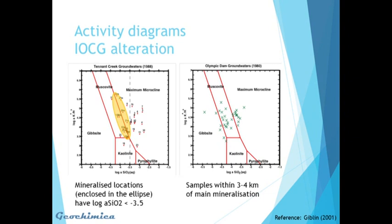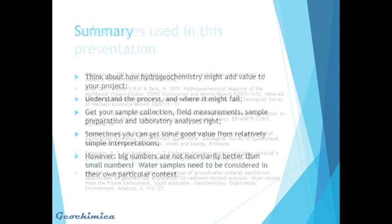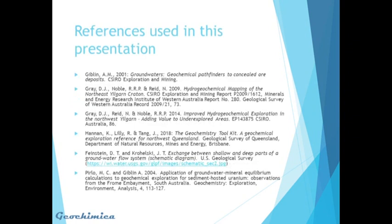We can also look at activity diagrams. Two examples here are for iron oxide copper gold type deposits. The one on the left is from Tennant Creek — a regional scale sampling exercise — and we can see that those samples indicated in the orange ellipse plot on the muscovite–K-feldspar tie line on the stability plot, and they're all mineralized, with a log silica activity of less than minus 3.5. Moving on to Olympic Dam, the majority of those samples also have log silica activity less than 3.5. In summary: think about how your hydrogeochemistry might add value to your project; understand the process and where it might fail; get your sample collection, field measurements, sample preparation, and lab analyses right. Sometimes you can get really good value from relatively simple interpretations, but big numbers in hydrogeochemistry are not necessarily better than small numbers — water samples need to be considered in their own particular context.